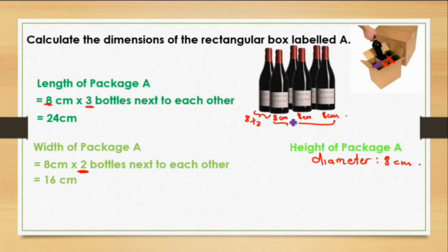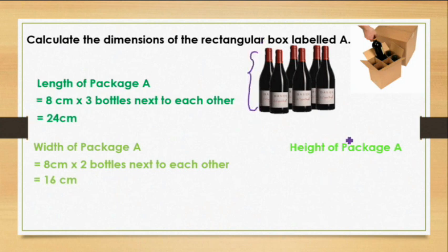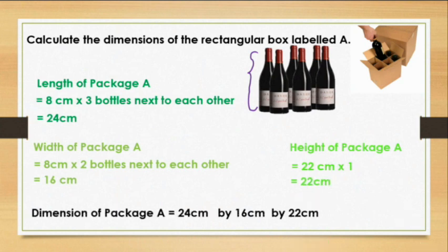Now, let's look at the height. They did tell us the height. Obviously, it's just one layer, so we are not going to be multiplying times by two and so on. It is just 22 centimeters times by one. The answer is, of course, 22. Now, remember, they said calculate the dimensions. So, you have to say 24 centimeters by 16 by 22.